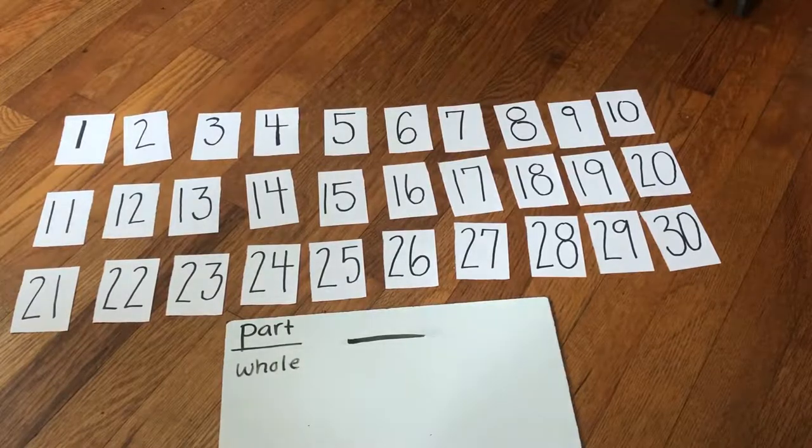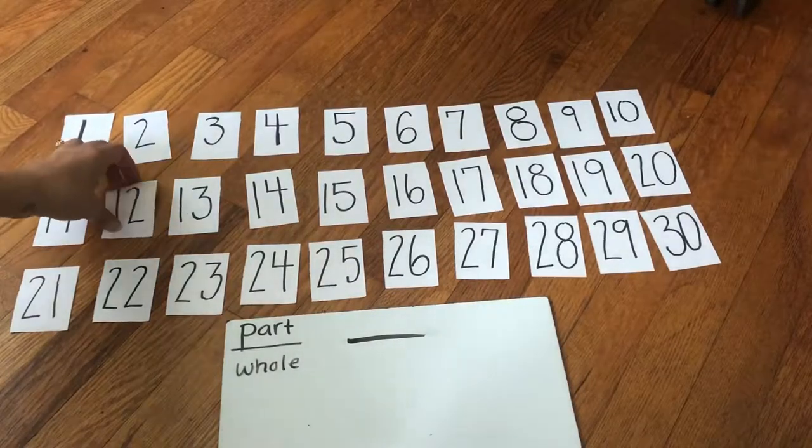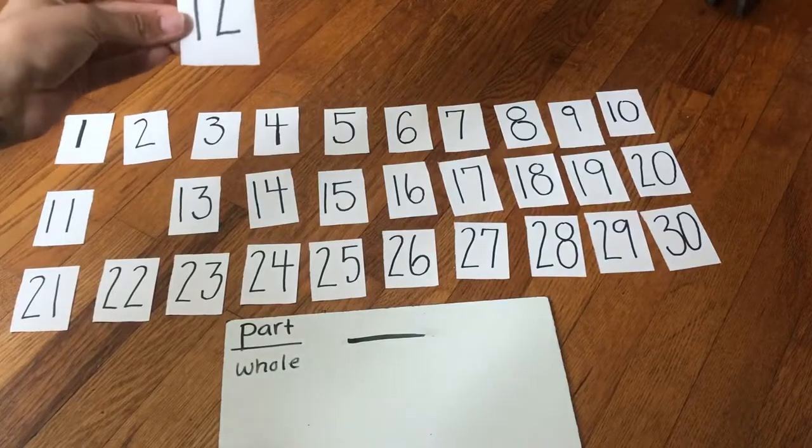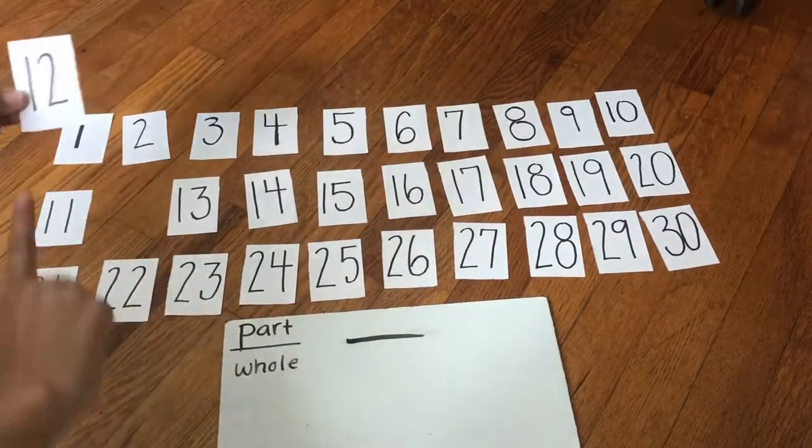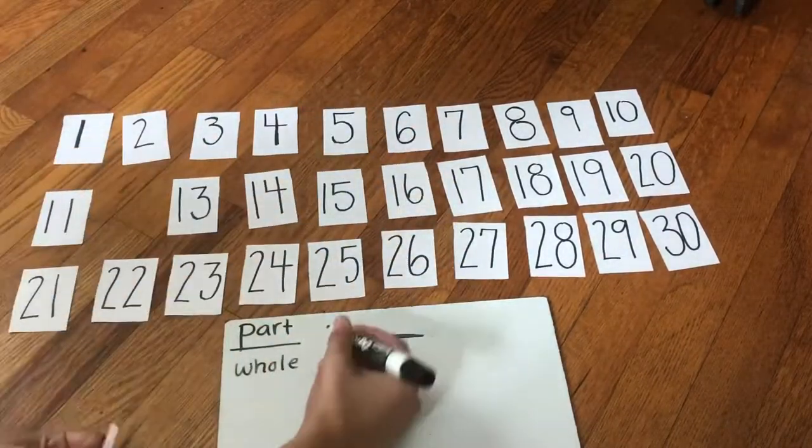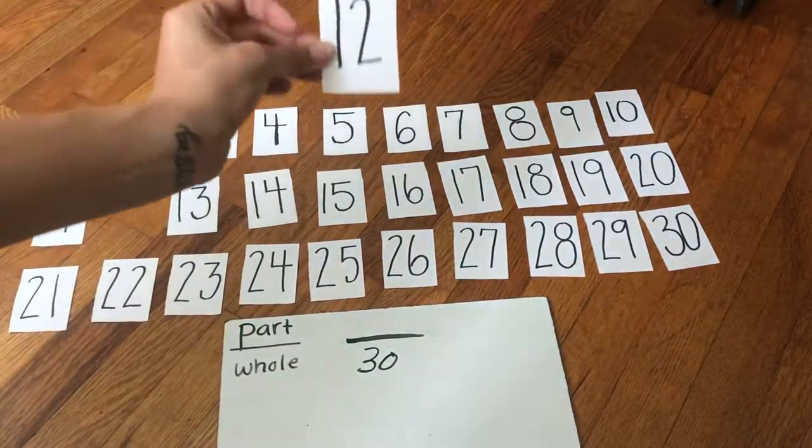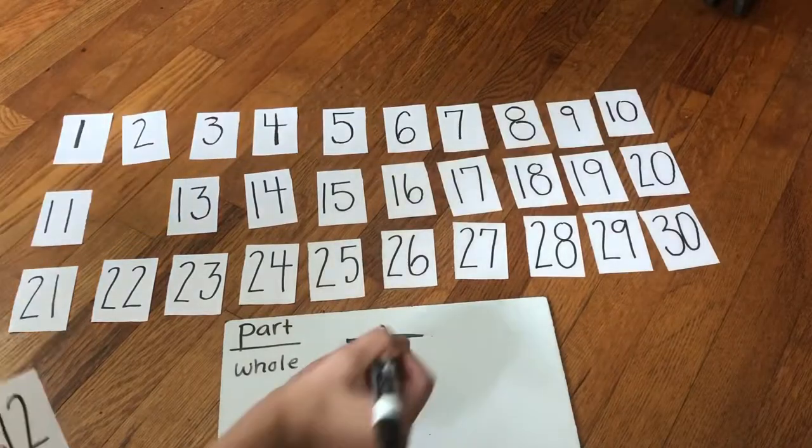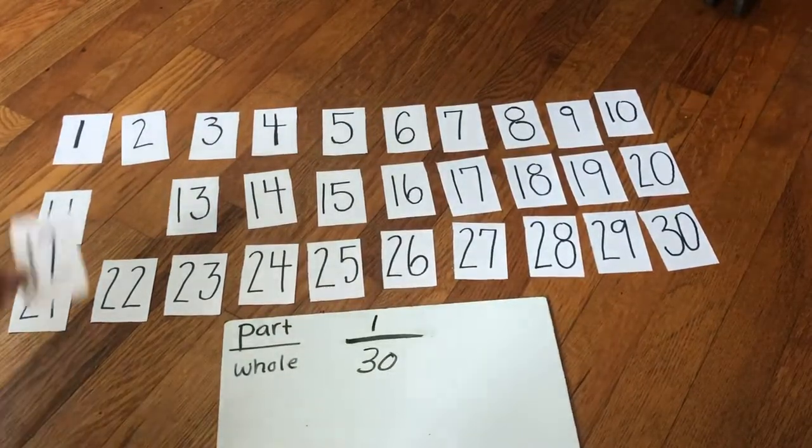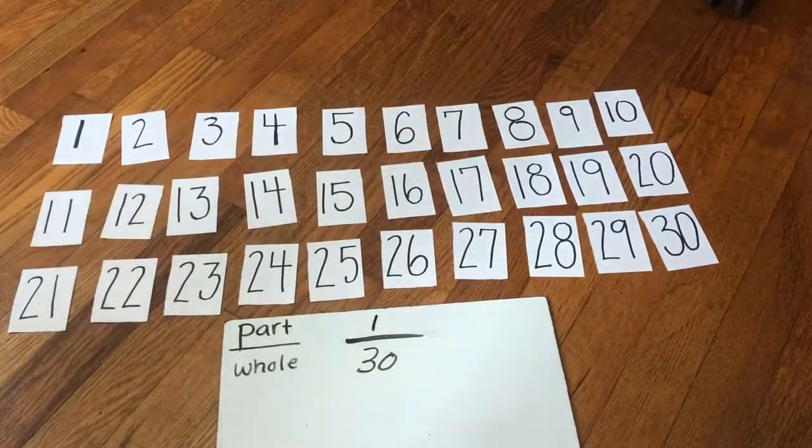All right, so the first one says, what's the probability of picking 12? Well, I have one 12 card out of 30 whole cards. So my whole is gonna be 30 because that's how many cards I have in total and only one is 12. So one out of 30 is my probability for picking 12.